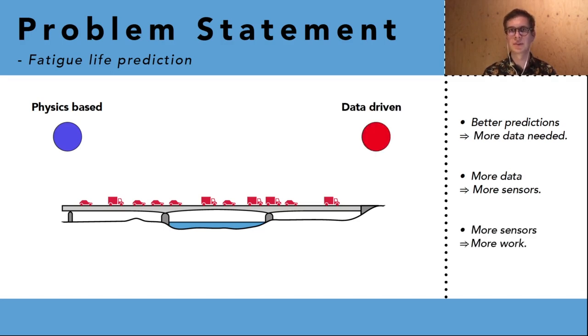We could also use a data-driven approach in which we use data to make predictions. If we want to improve our predictions we basically need more data and the data is often in the form of measurements. In the case of a bridge one puts sensors on the bridge that records the structural behavior. If we want more data then we need more sensors and this also means more work.